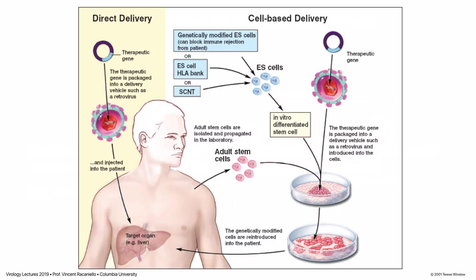There are two general ways we use viruses to treat human diseases. The first is direct delivery: you make your vector, package your gene into a virus, and inject it directly into the patient. Where you inject determines where it goes — if put in the blood it's likely to go to the liver first. Some applications involve injecting the virus directly into the bloodstream to treat cancers, or intramuscularly for immunization.